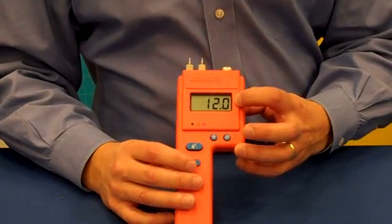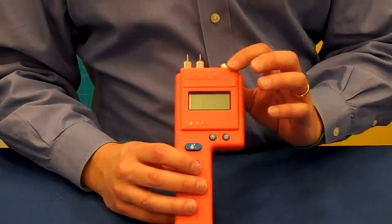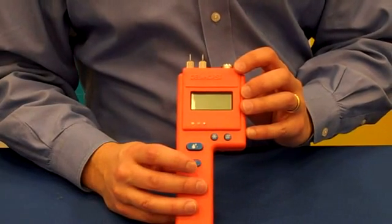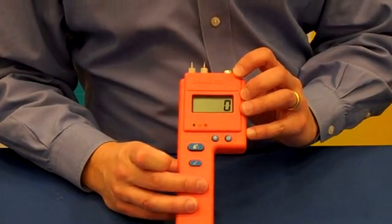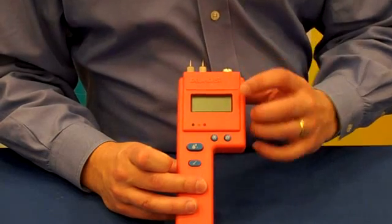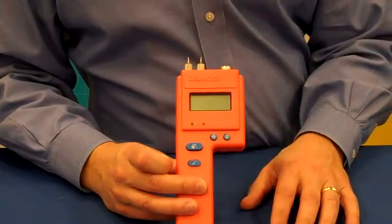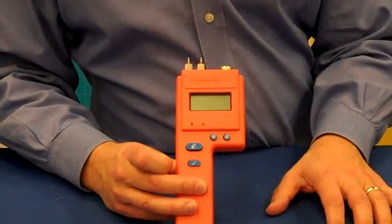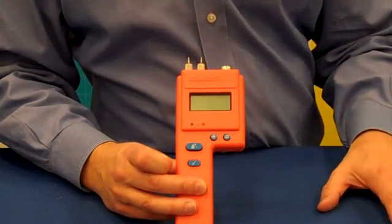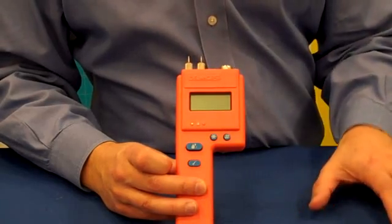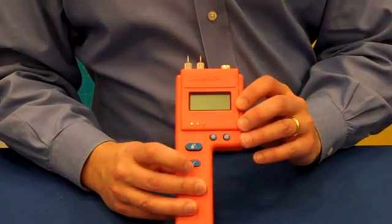The other feature that it has is the ability to store up to 100 readings. And you can then press this button, and it'll give you the number of readings stored in memory, the average of those readings, and the highest reading, so that you get an idea of the overall uniformity of your moisture levels and the job that you're evaluating.